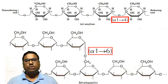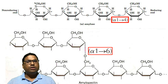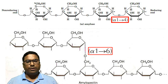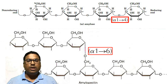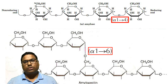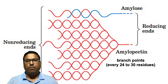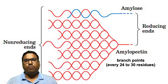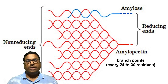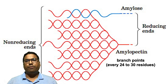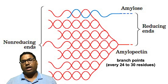The second polymer in starch is called amylopectin, which is a branched polymer of glucose units in which the branch point is linked with the alpha 1,6 glycosidic bond. We can see how amylose and amylopectin, the two important components of starch, come together to form the large polysaccharide we call starch.